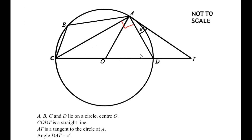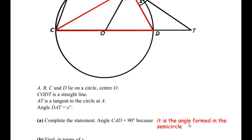Now since we had to write the reason to say that angle C, A, D is 90 degrees — we can see that C, O, D forms a diameter because the line C, D passes through the center of the circle, and using these two points we have drawn an angle at point A. The angle formed is in the semicircle, so we write: this is because it is the angle formed in the semicircle.